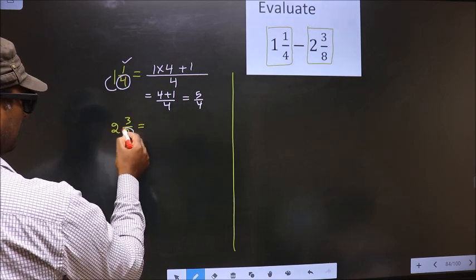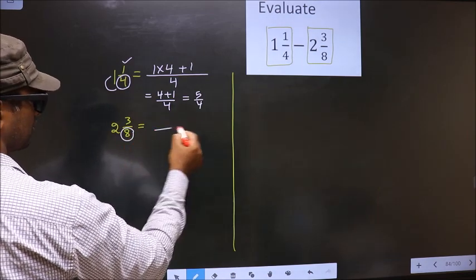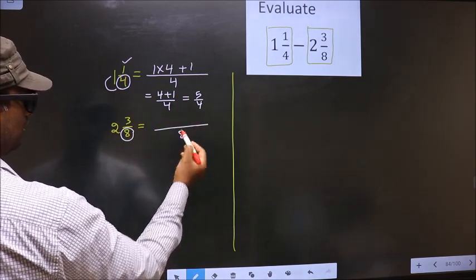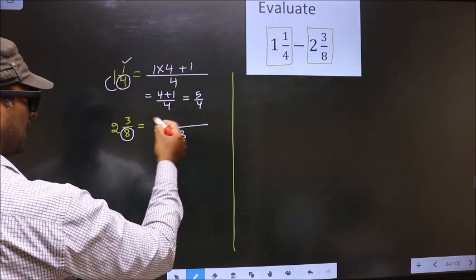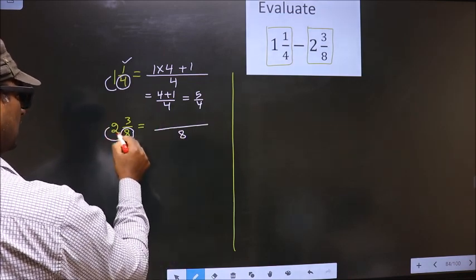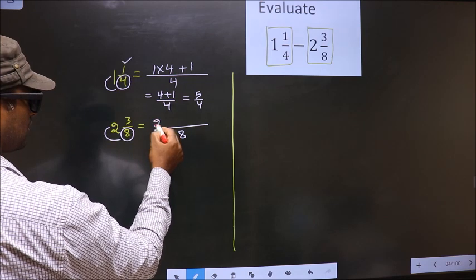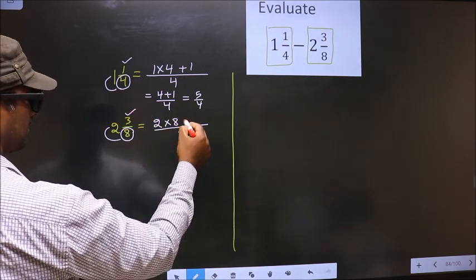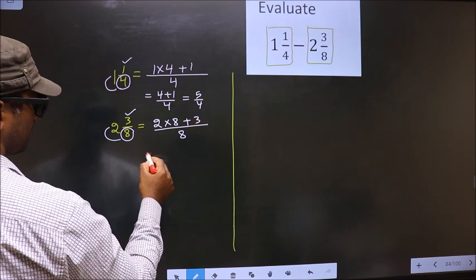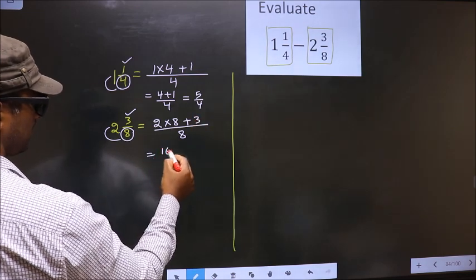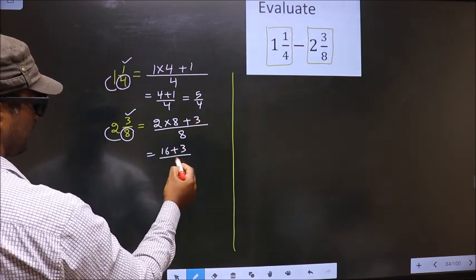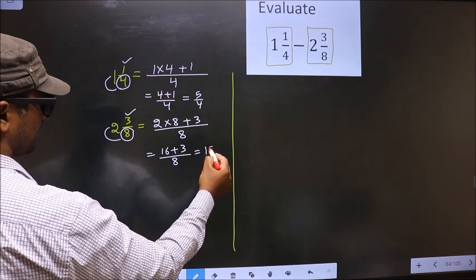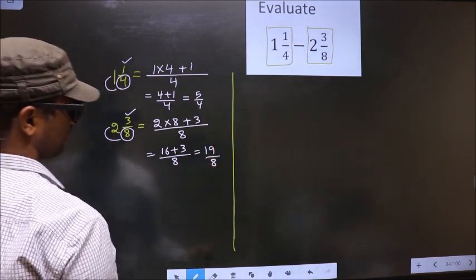Now, here the denominator is 8, so you also write 8 in the denominator. In the numerator, we should multiply these two numbers, that is 2 into 8, and also add this number, that is plus 3. So, 2 into 8 is 16 plus 3 by 8, which is 19 by 8.